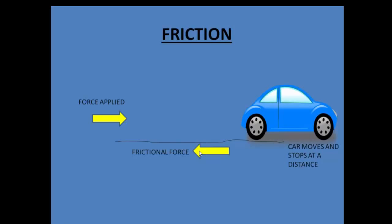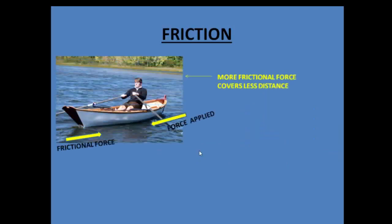This happens because the car is in contact with the ground. Consider a person sitting on a boat, trying to row it. There are two forces acting: one is the force applied by the person rowing, and the other force acts opposite to the direction of the boat's motion — that is the frictional force. With only a single person rowing, the friction force is relatively large, so the person is able to cover only a small distance.